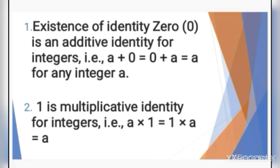Existence of identity: 0 is an additive identity for integers. That means if we add 0 to any integer, we will get that integer as the answer. For example, 1 plus 0 gives 1, and 100 plus 0 gives 100.